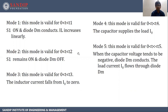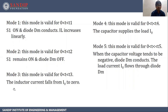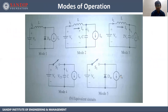Mode 3 is valid for 0 to T3. The inductor current falls from I0 to 0. Mode 4 is valid for 0 to T4. The capacitor supplies the load current I0. Mode 5 is valid for 0 to T5. When the capacitor voltage tends to be negative, diode DM conducts and the load current I0 flows through diode DM. These are the equivalent circuits for Mode 3, Mode 4, and Mode 5.